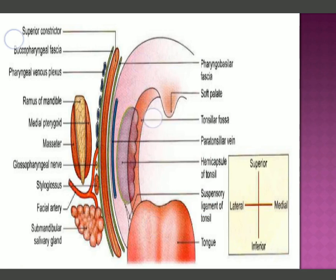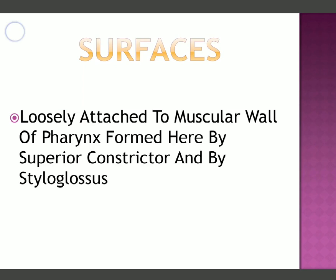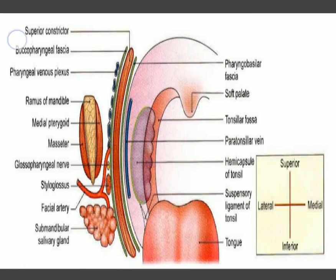In this figure you can see the oral cavity, the arches, and the tonsillar fossa where the palatine tonsils are located. The green outline represents the hemicapsule, which is an extension of the pharyngeal basilar fascia. The lateral surface is loosely attached to the muscular wall of the pharynx, which is formed by two muscles: the superior constrictor muscle and the styloglossus.